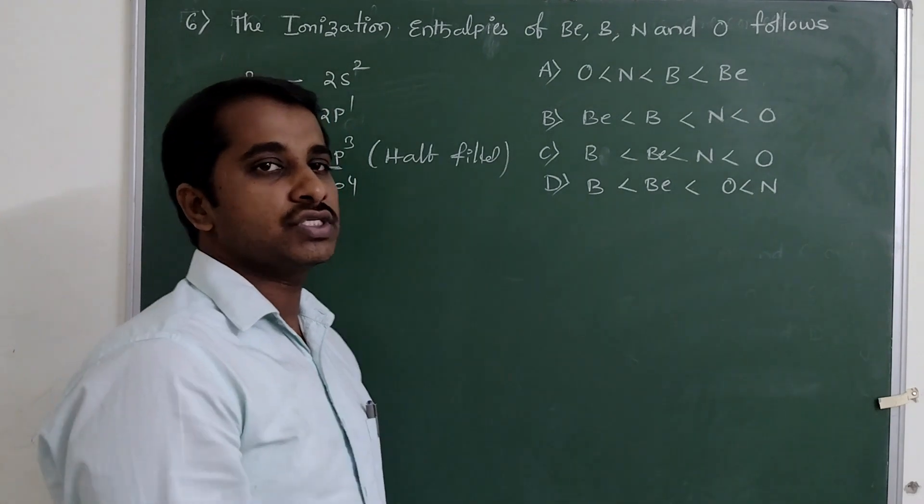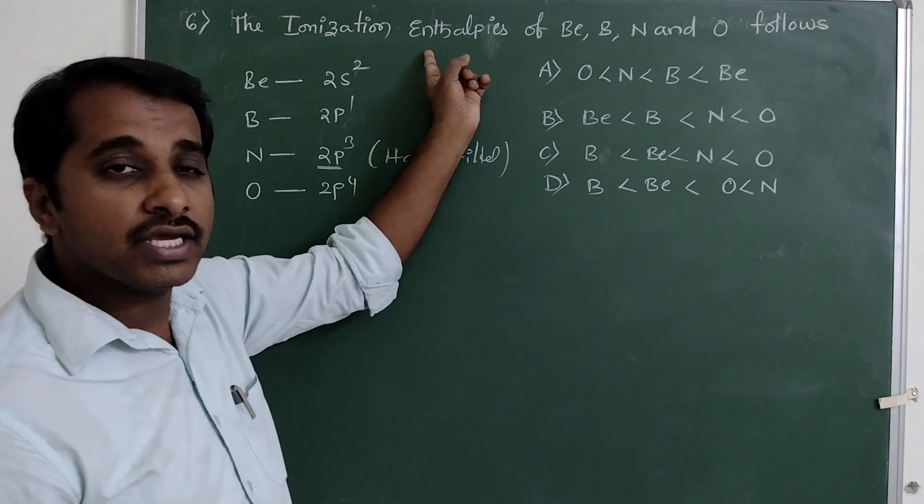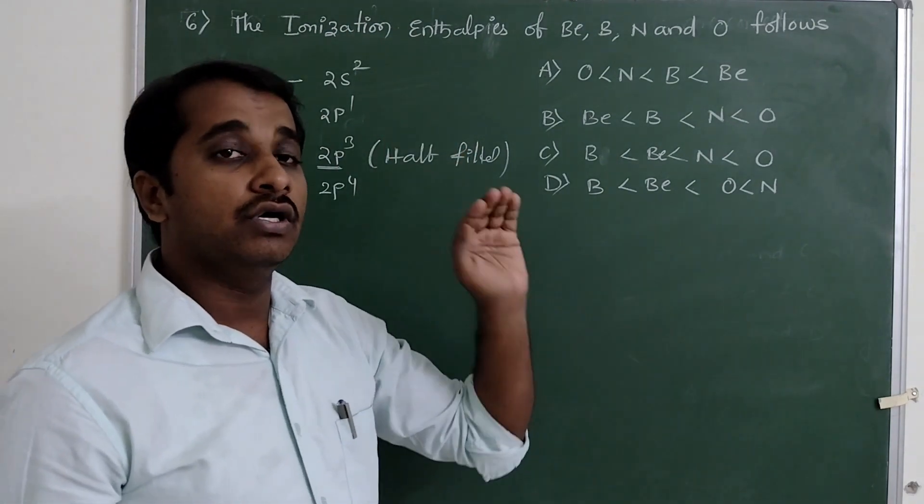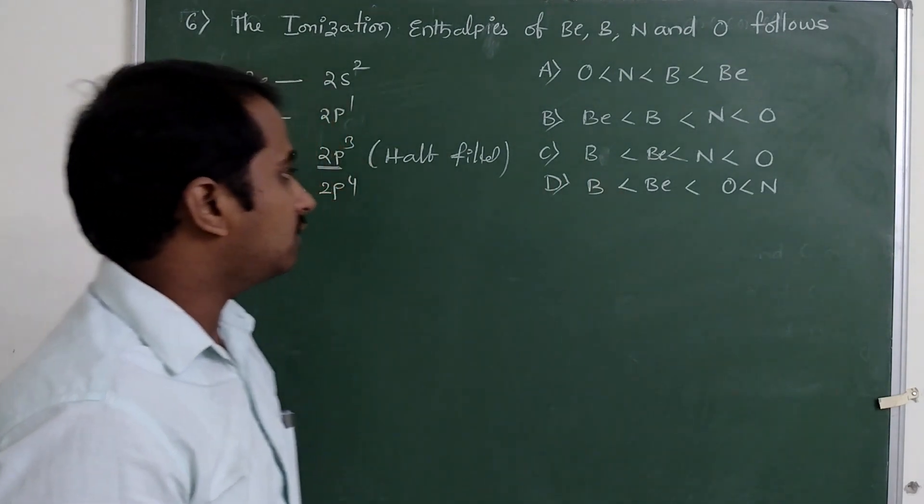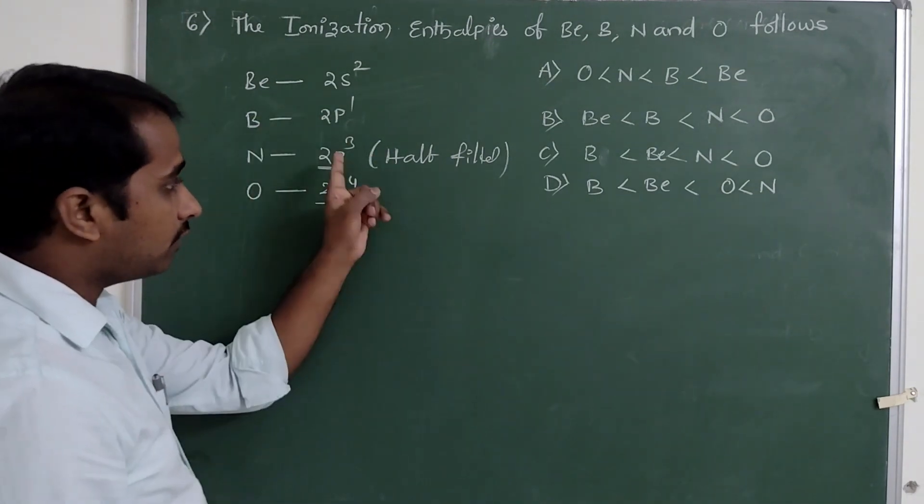That is ionization enthalpy. Ionization enthalpy is the amount of energy required to remove an electron from its outermost shell. Here it is more than 2p⁴ because half-filled configuration is more stable than other configurations.